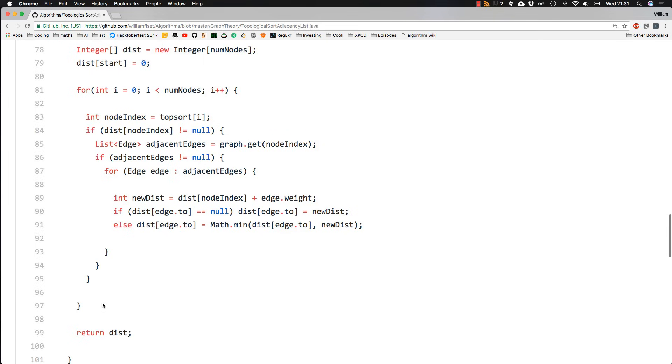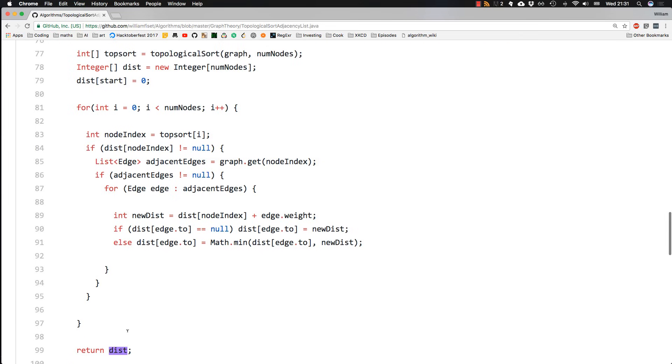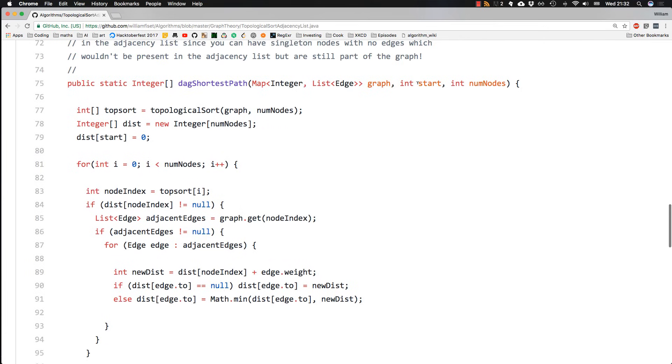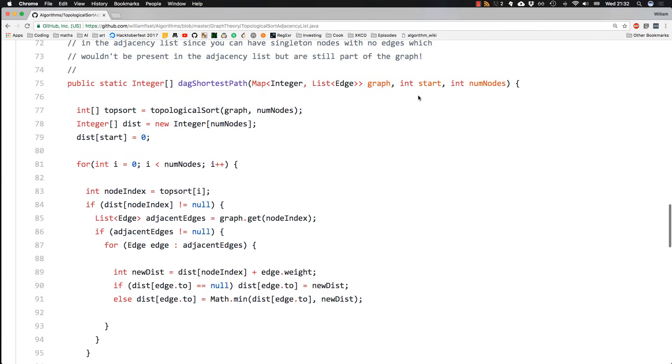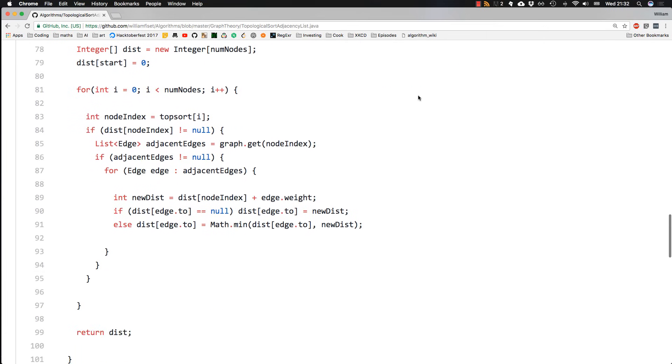And at the end, we just return that distance array. And we can get the distance from our starting node to any other node in the graph, just through a lookup in this array.